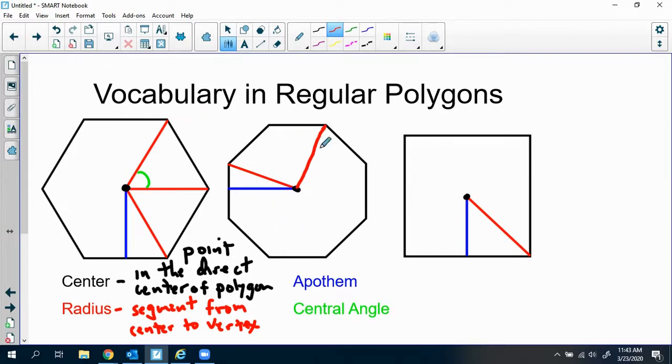In this octagon, there are eight you can draw. And in this square, there are four that you could draw. So that's what a radius is. Radius goes from the center to a vertex.